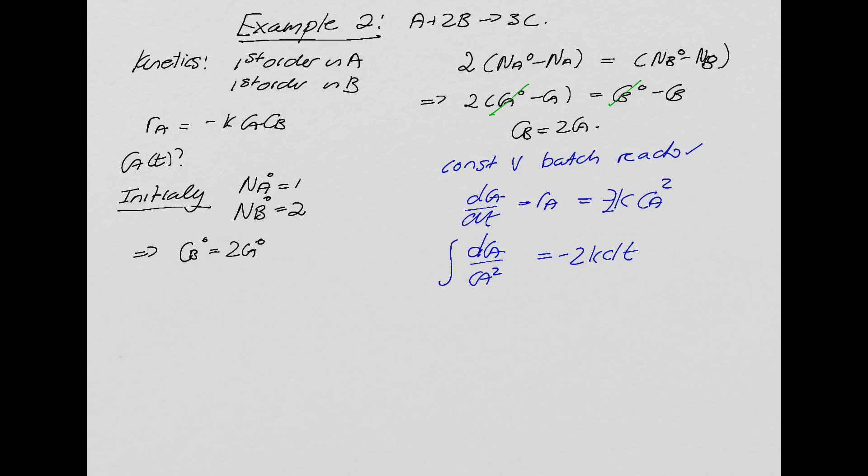Let's integrate between limits for a change. We started off with Ca0, and we'll stop at Ca, and initially it's between 0 and T. So this implies the integral of 1 over Ca squared is going to be 1 over Ca with a minus, and between limits Ca0 and Ca, is going to be equal to minus 2 K. We can take those out the integral because they're constants, and if we integrate dt, it'll just be T.